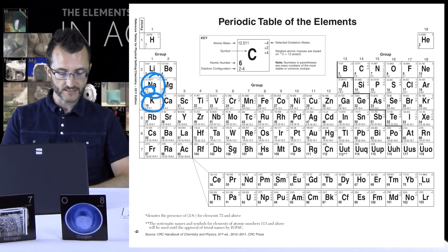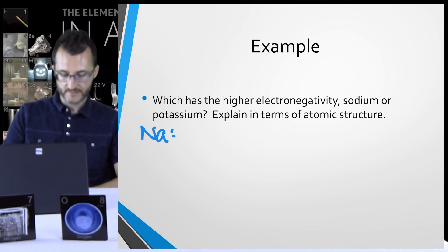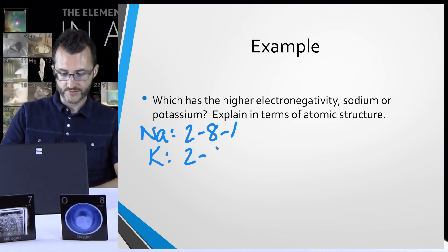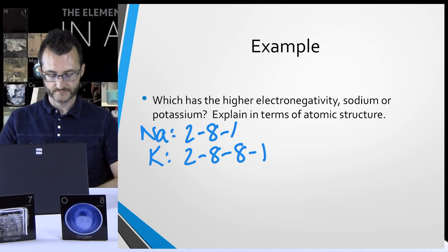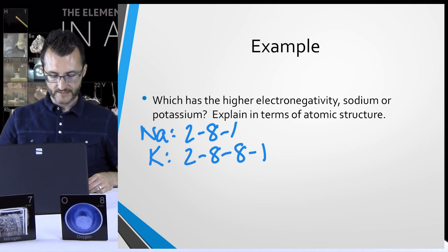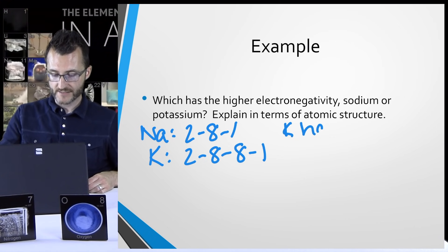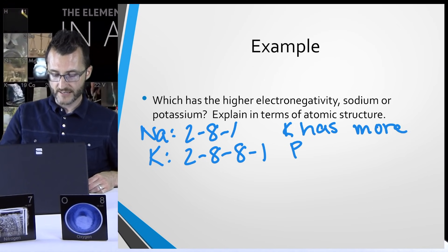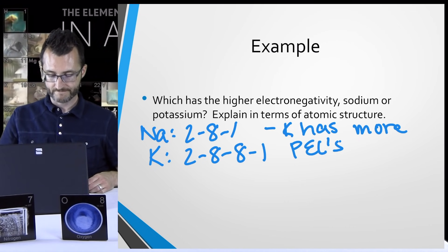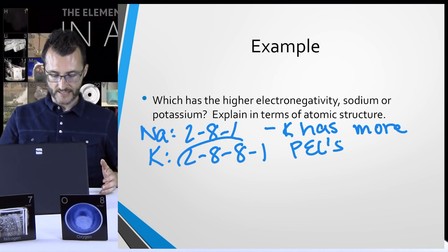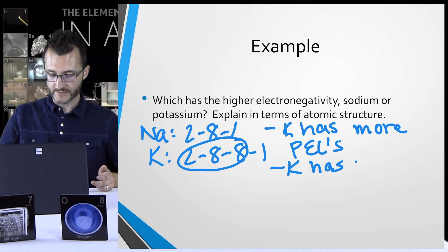Na has the electron configuration 2-8-1 and K is 2-8-8-1. Let's compare their atomic structures. K has four energy levels versus Na's three, so K has more principal energy levels. K also has more core or shielding electrons — those electrons that get in the way. And going along with more energy levels, K has electrons that are farther from the nucleus. So K has more PELs, more shielding, and electrons farther away — all leading to weaker attractions between the nucleus and valence electrons.